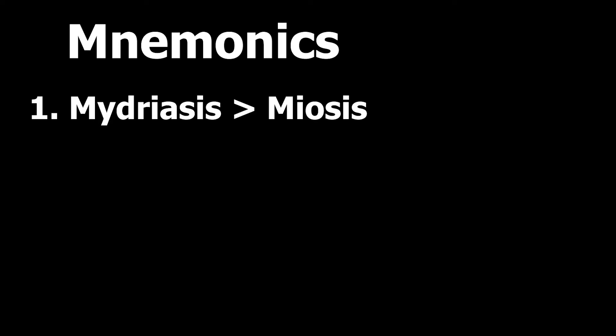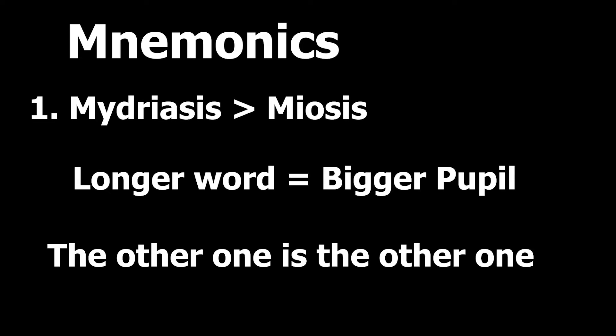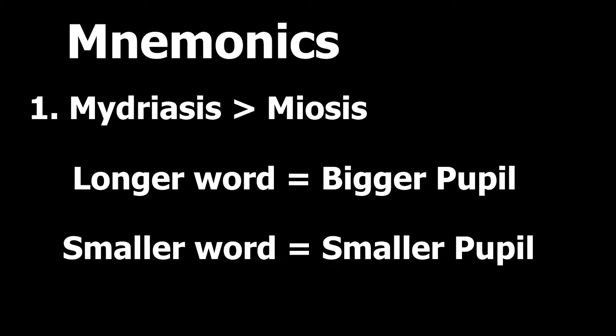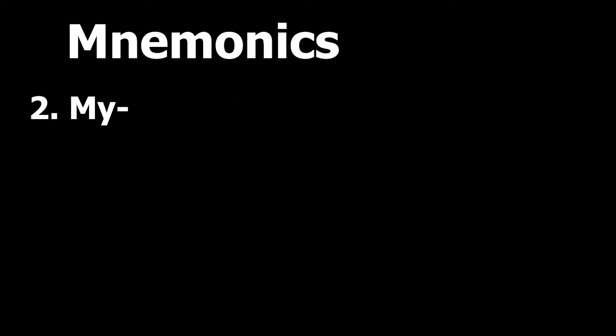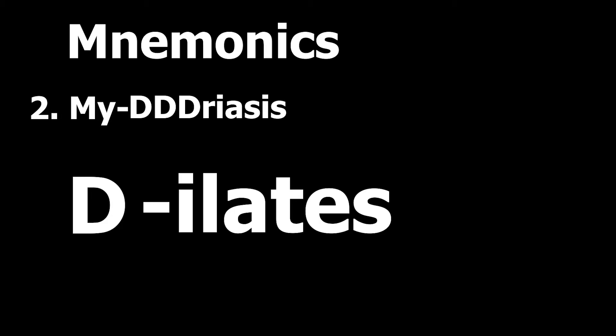There's a lot of different ways people try to remember this, but here's a few. My favorite is that mydriasis is a longer word than miosis, so a longer word equals bigger pupil. And then the other one: mydriasis has a D, so it dilates.